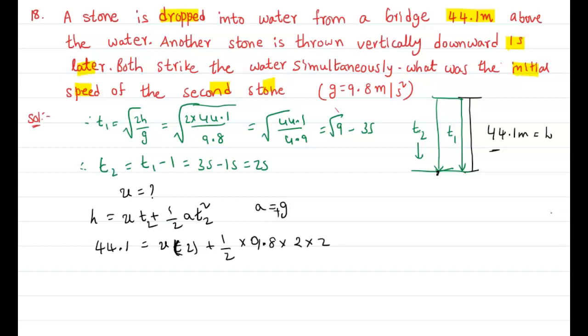44.1 equals u times 2 plus 4.9 times 4. That implies 2u equals 44.1 minus... so 2u equals 44.1 minus 4.9 times 4. Therefore u equals 24.5 divided by 2, which equals 12.25 meters per second.